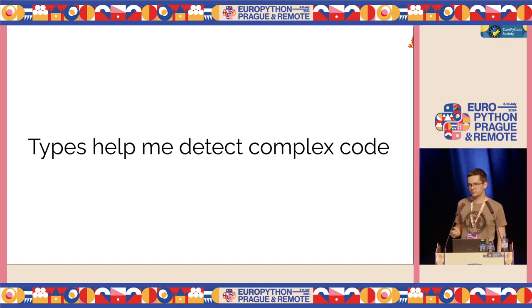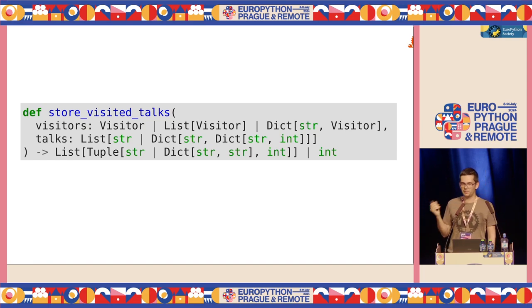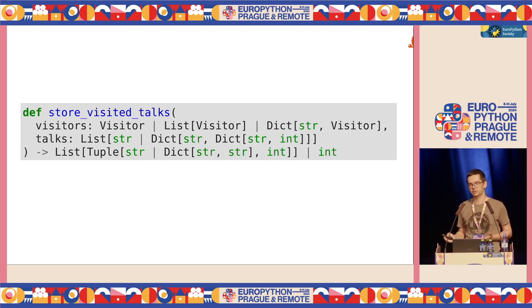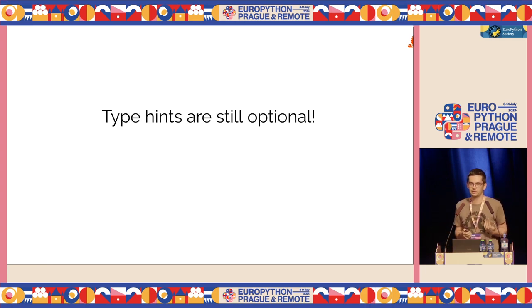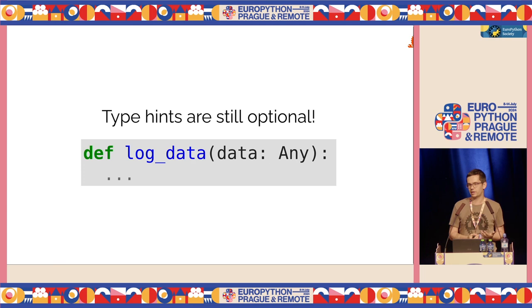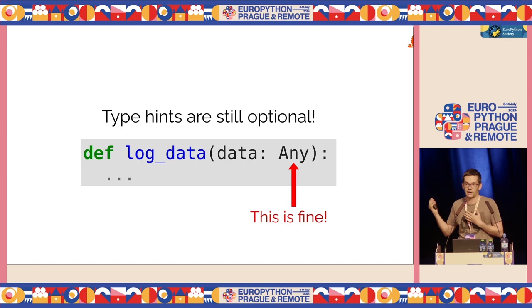Types also help me detect when code gets a little too complex. If I'm writing a function and I'm trying to annotate it and the type is very hard to express, I'd probably realize that maybe this code isn't the best in the world and I should refactor into several other functions. When it's very hard to type, it can be a symptom of the code being too complex. But we're still in Python, so type hints are optional — if I need to stuff anything into a function, I just say it's 'Any', and that's perfectly fine.